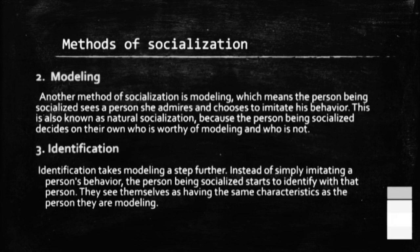Second type hai aapke paas modeling. Isko natural socialization bhi kehte hain, because ismein individual khud choose karta hai ke who is worthy jisko wo imitate kare. And usually it's someone jisko individual admire karta hai ya jo kisi bhi individual ki inspiration ho.